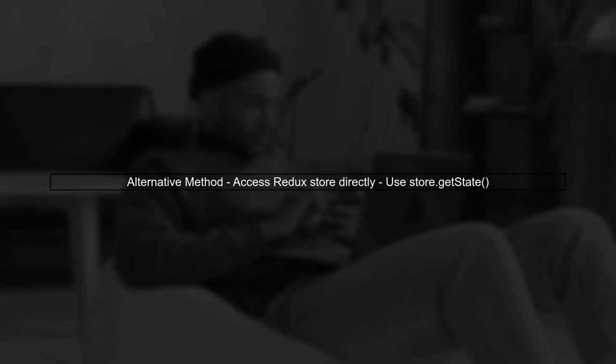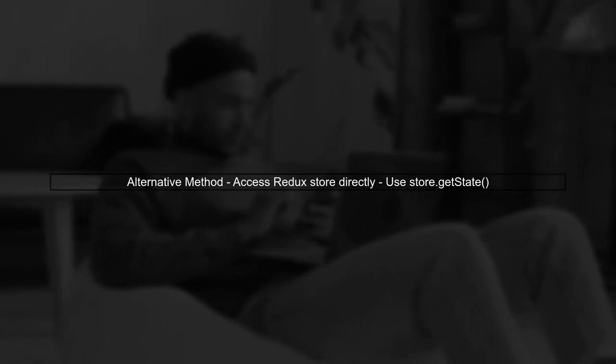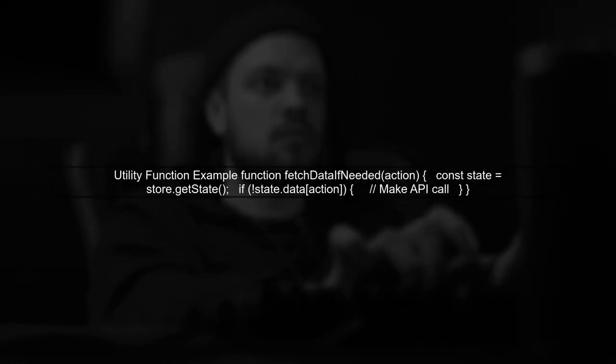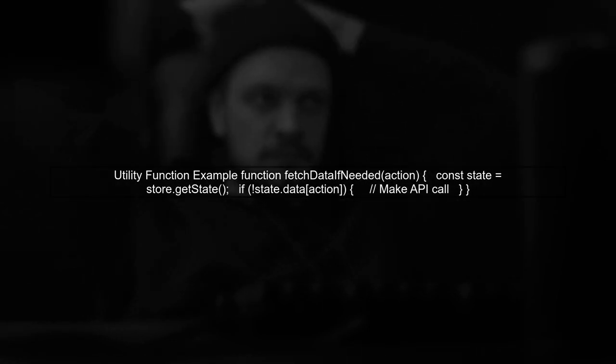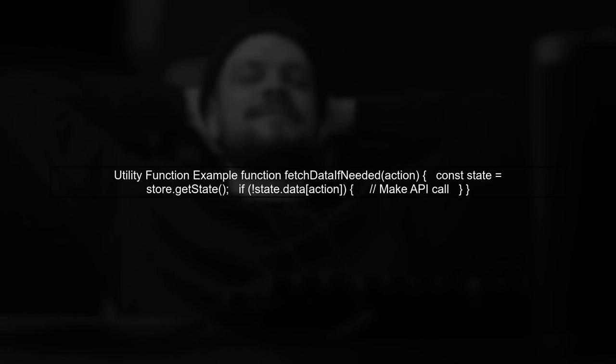One common approach is to use the Redux store directly. You can import the Redux store into your function and use store.getState to retrieve the current state. This allows you to check the state without passing it as a parameter. Regarding your specific use case, you can create a utility function that checks the Redux state before making an API call. This way, you can avoid unnecessary calls if the data already exists.